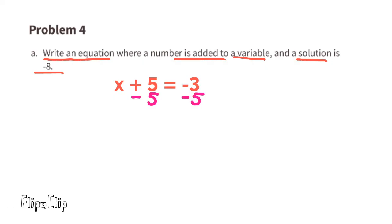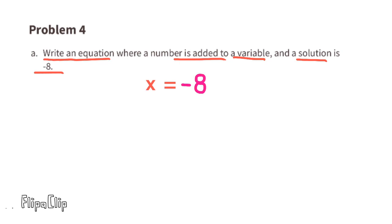To verify: subtract 5 from both sides. We get x equals negative 3 minus 5, which is a total of 8 negatives, so x equals negative 8. The answer is x plus 5 equals negative 3.